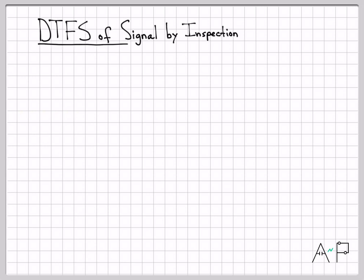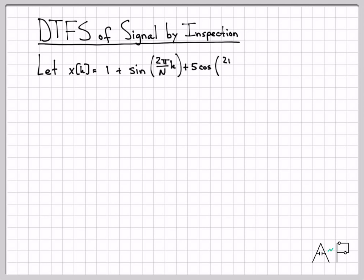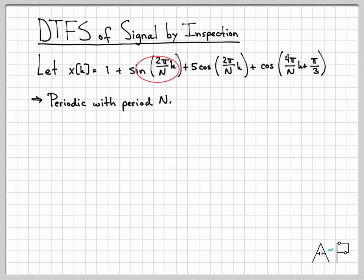The signal we're working with is x of k equals 1 plus sine of 2πk/N, plus 5 cosine of 2πk/N, plus a cosine term. This first sine term is periodic with period N, this cosine term is periodic with period N, and this last term is twice the frequency of those — it repeats twice as often. So the total signal x of k has period N, meaning its fundamental frequency is 2π/N. There's a cosine of the fundamental, a sine of the fundamental, and a cosine of twice the fundamental.